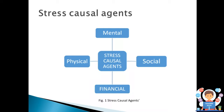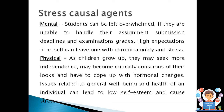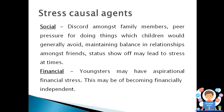Stress causal agents: there are four basic causal agents — mental, social, financial, and physical. Mental causal agent: students can feel overwhelmed if they are unable to handle assignment submissions, deadlines, and examination grades. High expectations from oneself can lead to chronic anxiety and stress. Physical agent: as children grow up, they may seek more independence, become critically conscious of their looks, and have to cope with hormonal changes and general health issues, which can lead to low self-esteem and cause stress.